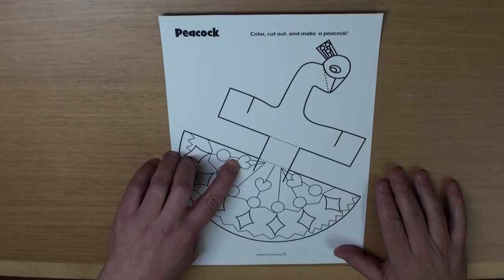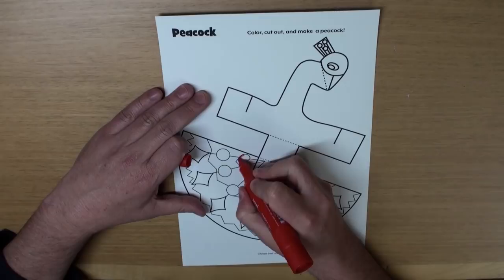What is this? Yeah, it's a heart. One, two, three. And I'm going to color the hearts red. Yeah, great.